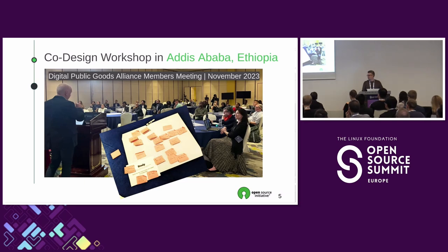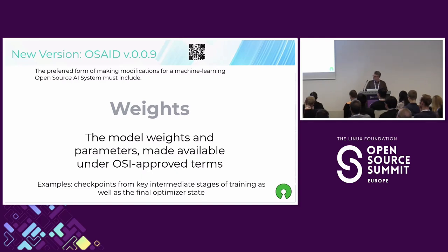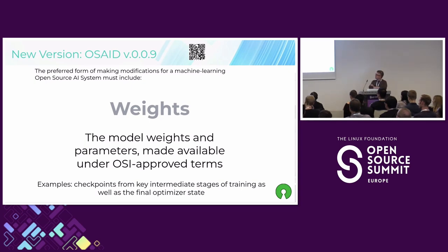How does that definition work? The first thing that came out is that in order to use a system, you need to have access to the weights in a way compatible with the principles of the open source definition — meaning no restriction on use, no discrimination on the kind of users. That's fairly uncontroversial. To use and share it, that's what you need.